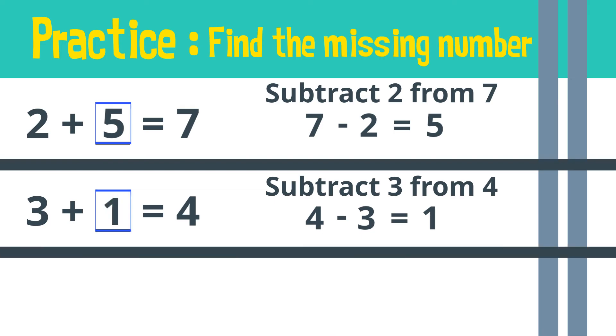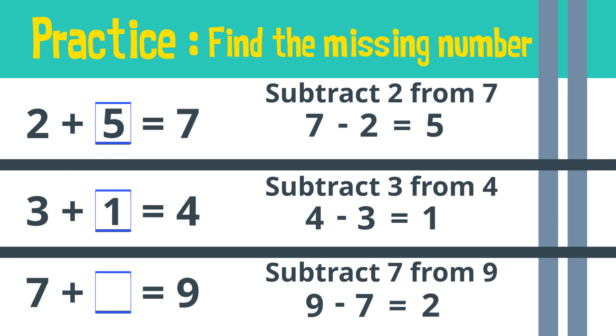Finally, we have seven plus what number equals nine. Like before, we subtract the value on the left side from the value on the right side. Nine minus seven equals... two! So the missing number is two.